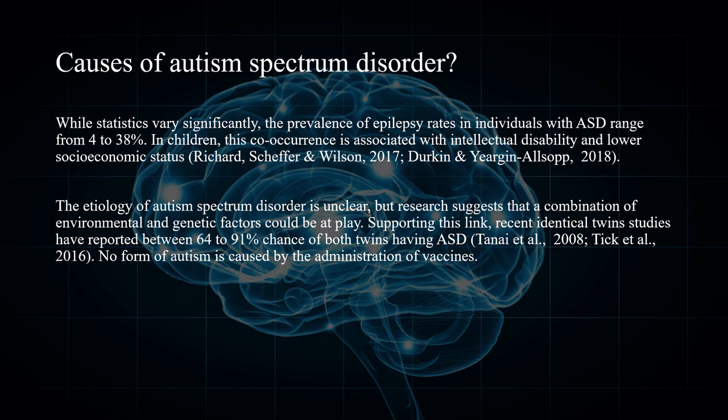The etiology of Autism Spectrum Disorder is unclear, but research suggests that a combination of environmental and genetic factors could be at play. Supporting this, recent identical twin studies have reported a 64 to 91% chance of both twins having Autism Spectrum Disorder. No form of autism is caused by the administration of vaccines.